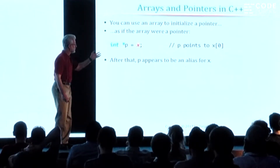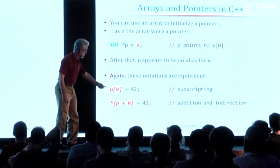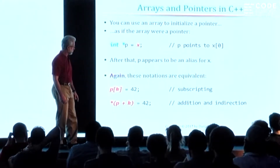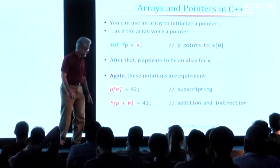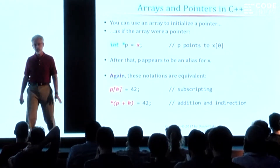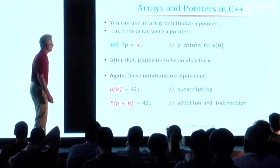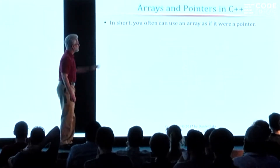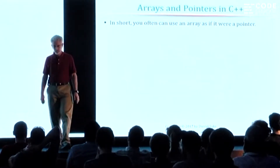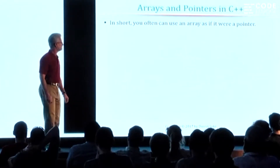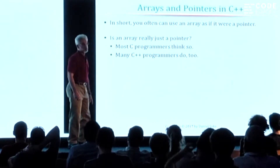They are two different names naming what appears to be the same thing. You can go ahead and treat the pointer as if it's an array using the subscript operation, or you can treat the pointer as if it's a pointer using pointer arithmetic and the dereference operator. So in short, there are all these ways in which you can treat an array as if it's a pointer.